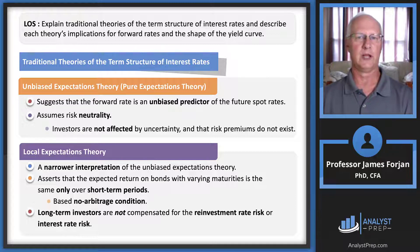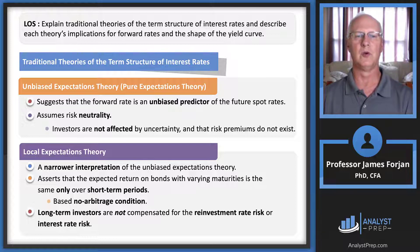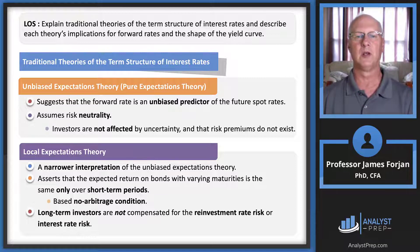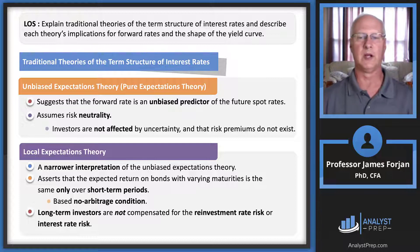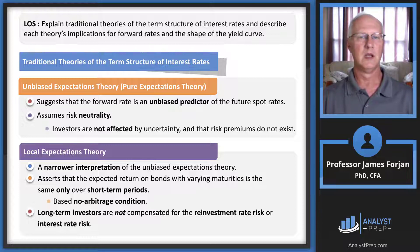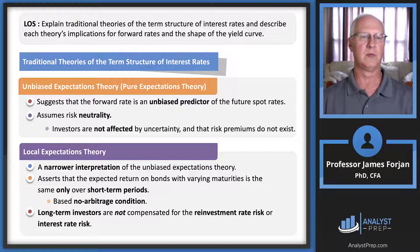Local expectations theory is a narrower interpretation. It assumes that the expected return on bonds with varying maturities is identical over short-term periods, probably because of arbitrage during those short time periods. Over the long term, however, this is not true because you have interest rate risk — specifically duration and convexity — and reinvestment rate risk.